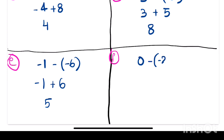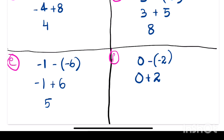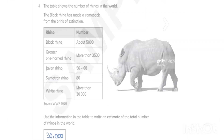Now 0 minus minus 2. Zero is bigger than minus 2 because 0 comes comparatively on the right side compared to minus 2 on a number line. So we write 0 first. Zero plus 2 gives the answer 2.